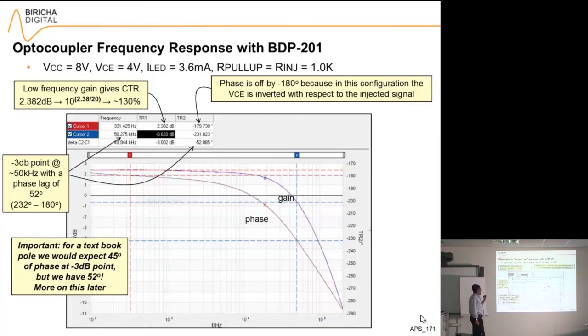One important thing to note is that if this were a textbook pole, then you'd expect that at the three dB point you have 45 degrees of phase lag, but in fact we have 52. The reason is that we are approximating the bandwidth of the opto to a first order system. The important issue here is that instead of 45 degrees I have got 52, so before I have even started I have lost seven degrees of phase margin, and I wouldn't have even known this had I not measured it. So it is vitally important that you measure the opto so that you know exactly how many extra degrees of phase you have lost.